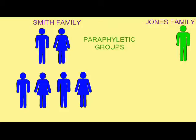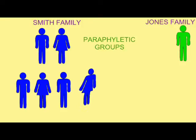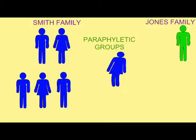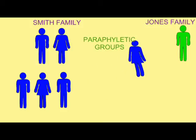In humans, we can use last names to denote relationships. So let's say that this family is named Smith. The name Smith denotes relationship, that those who share the name Smith are descended from a common ancestor. If one of the women changes her name when she marries, she is no longer a Smith.